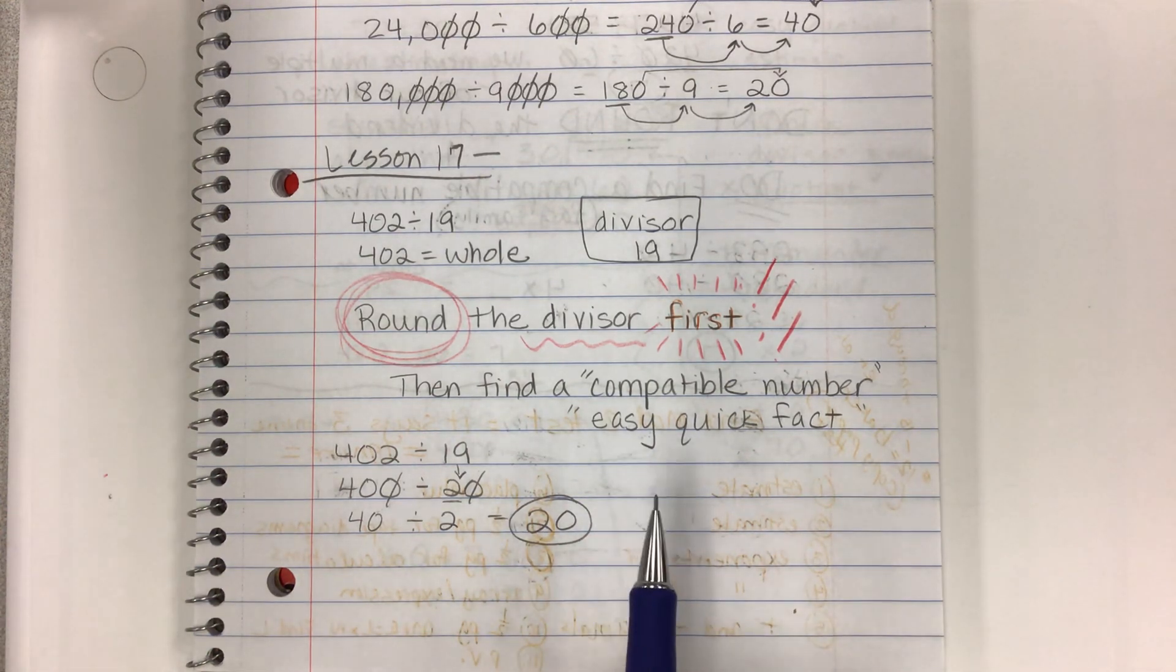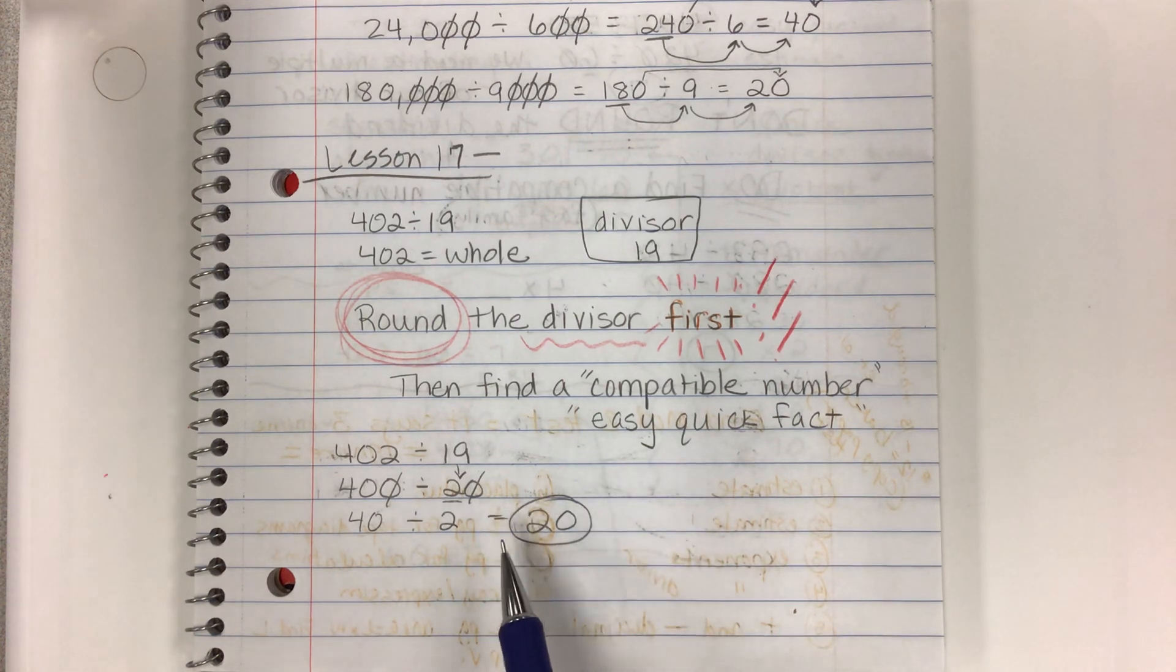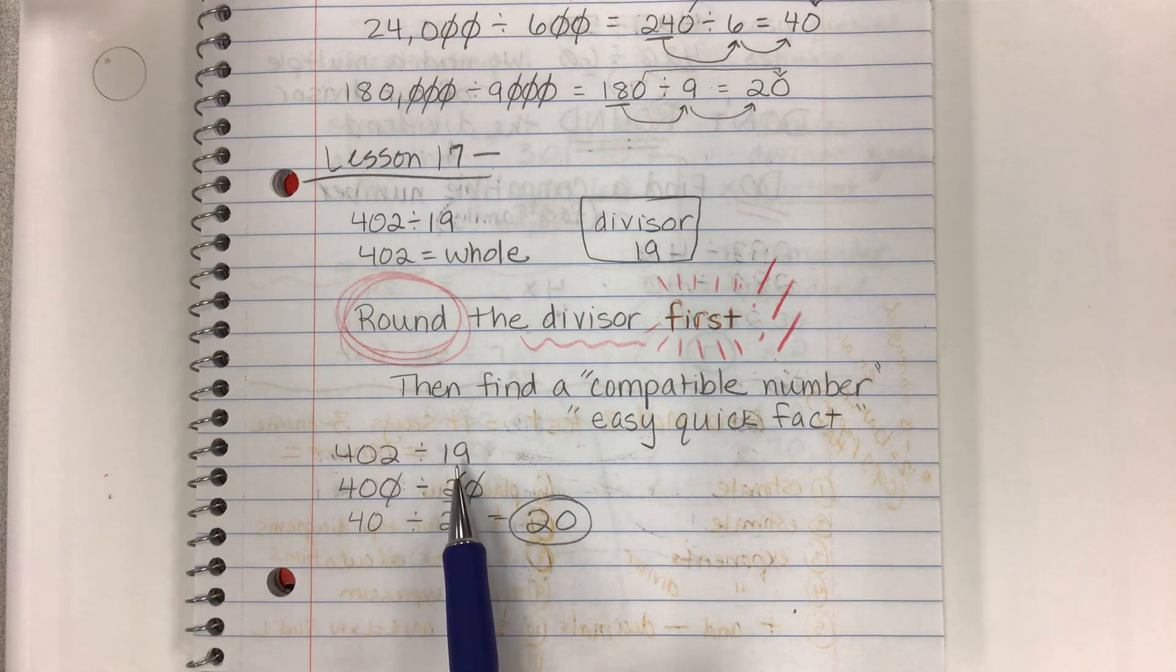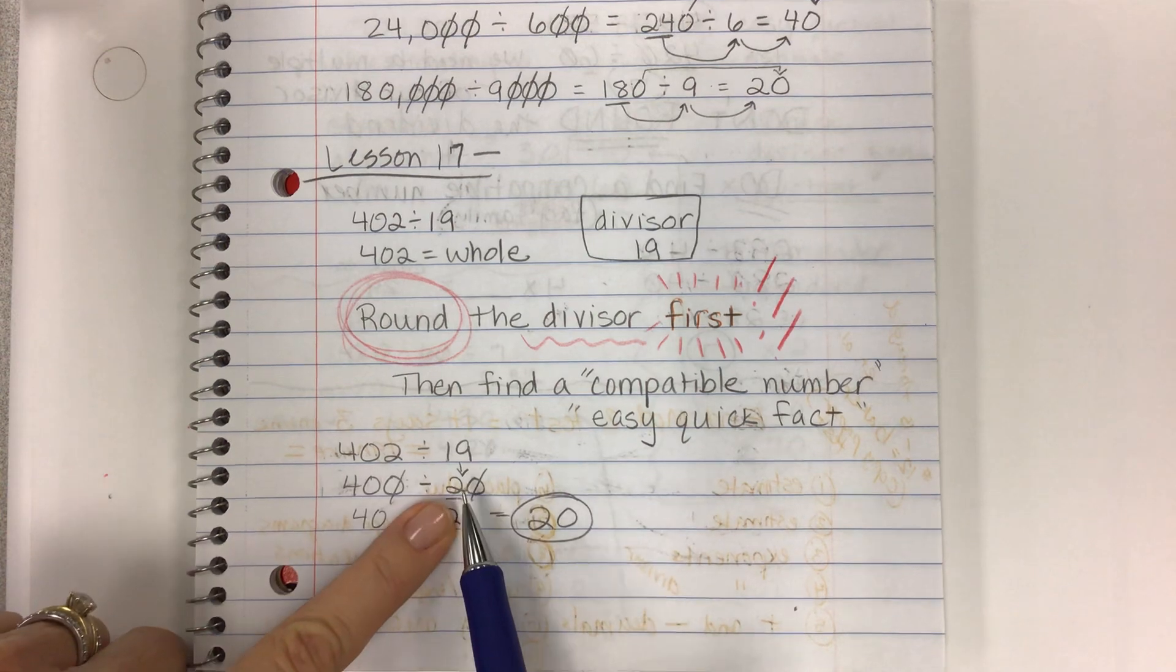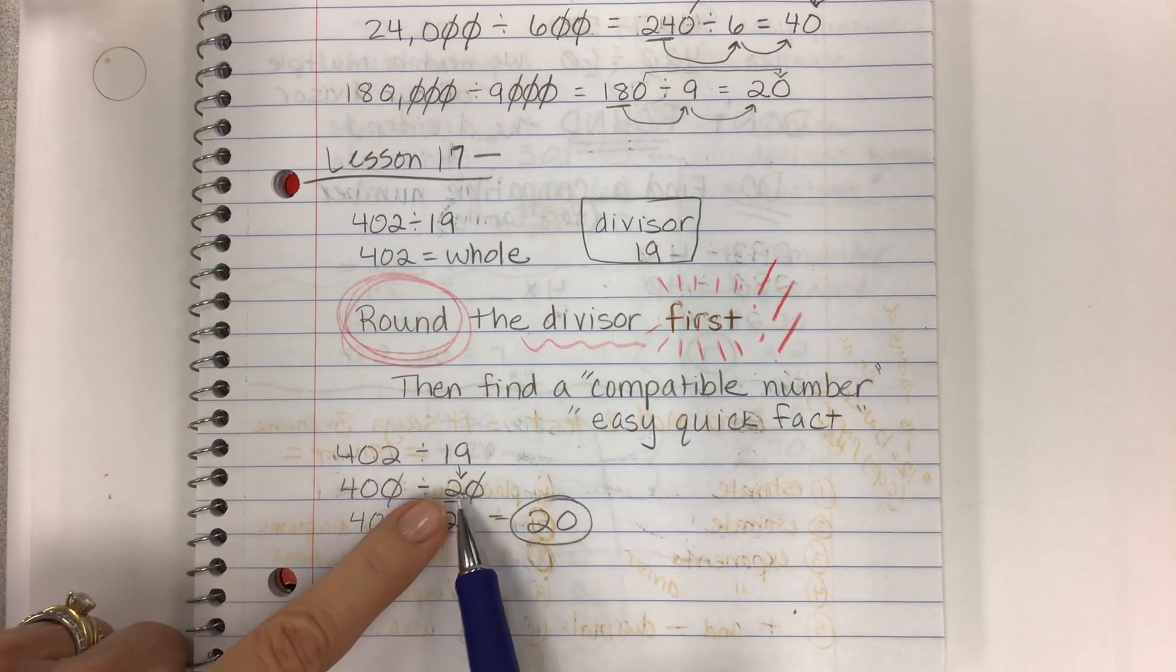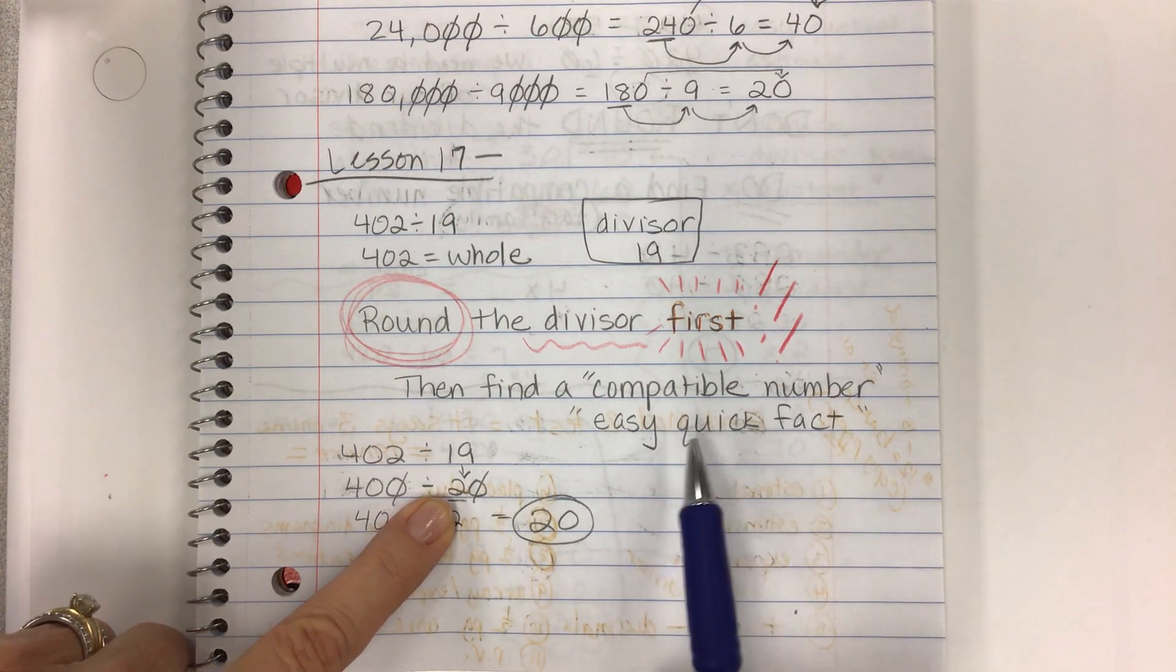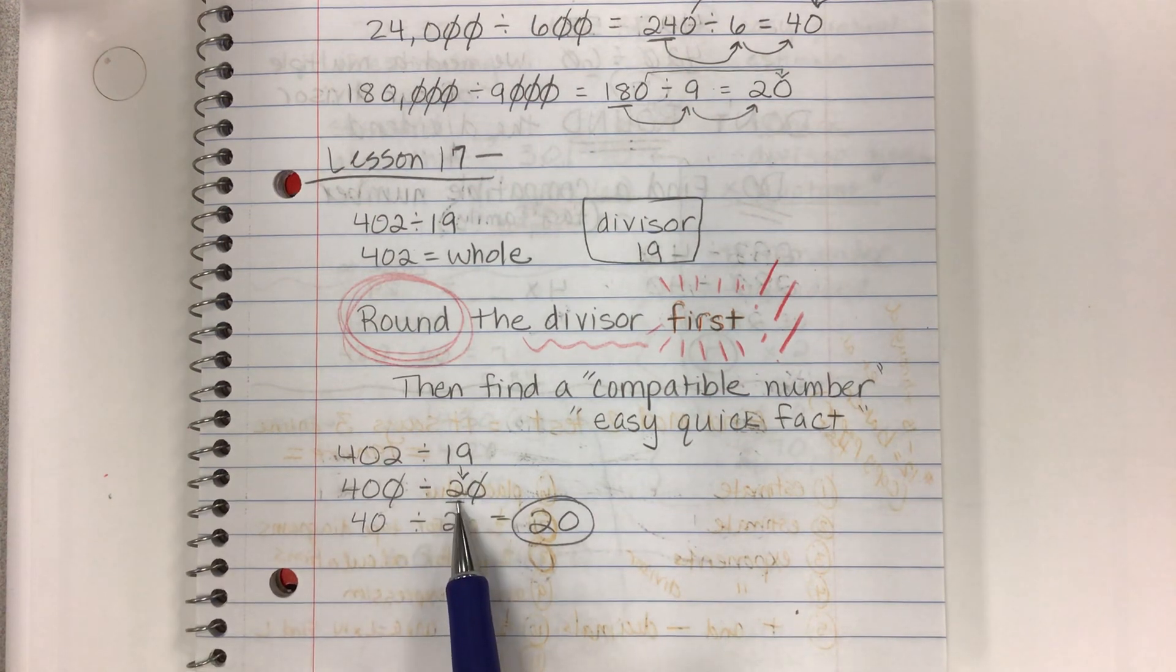Some kids like to estimate so much that they just estimate for the rest of the year, and I'm like, no, no, we're actually dividing at some point, maybe in Lesson 18, but today we're going to be just doing a lot of estimating before we divide. So if you round the divisor first, the divisor is 19, and you round it to 20, then you want to get a multiple of this number.